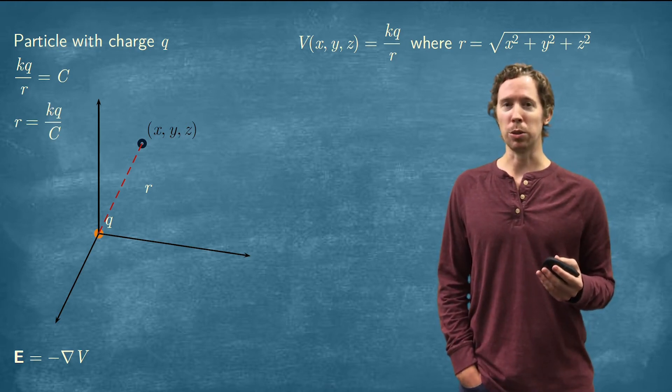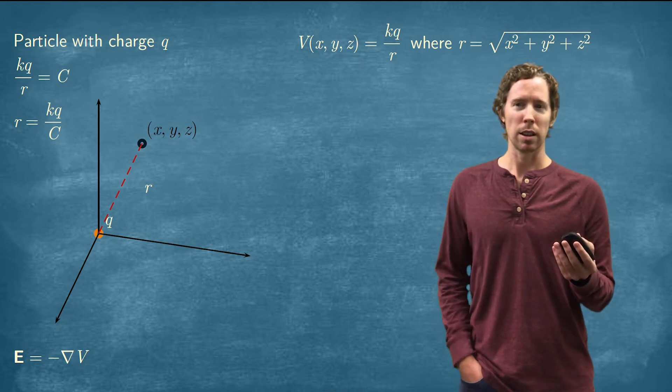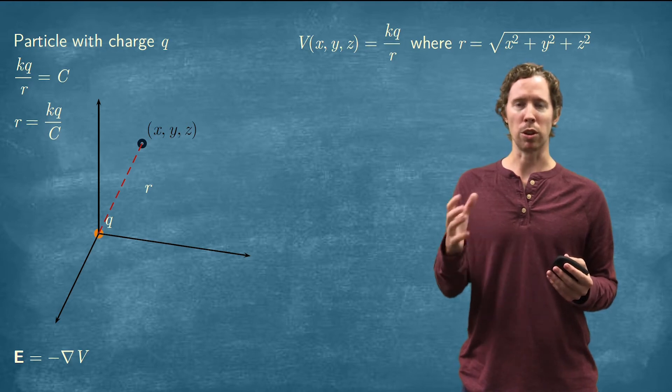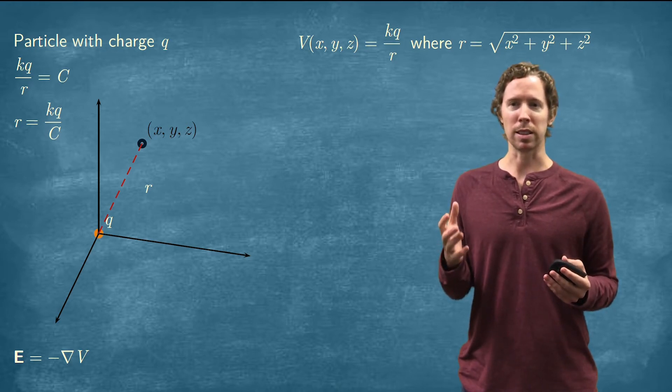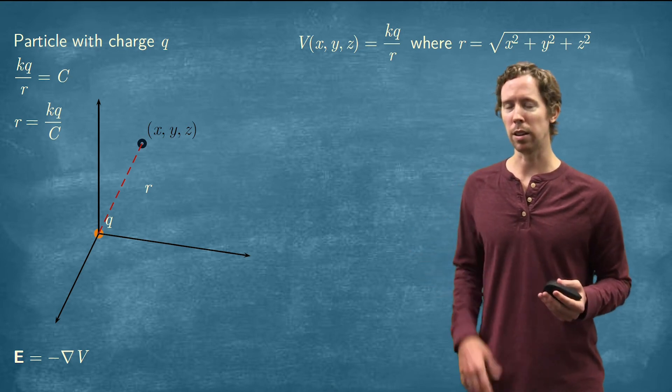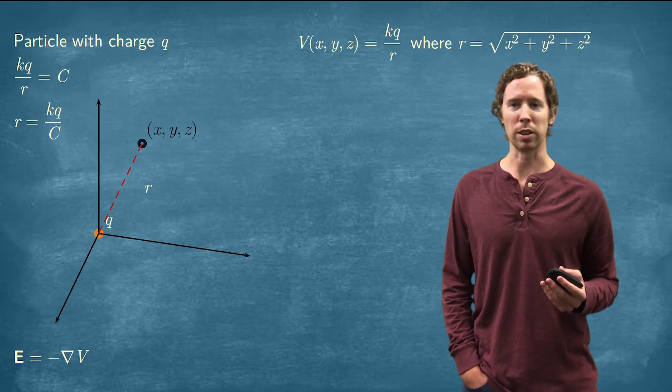We get R is equal to this constant. So that's saying that for every point that has the same distance from the origin R, it has the same electric potential. And again, that makes sense based on the actual electric potential function itself.